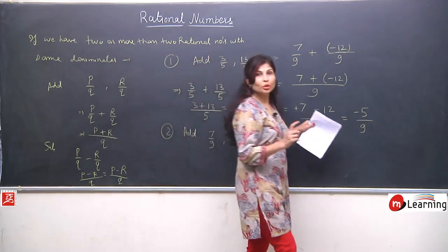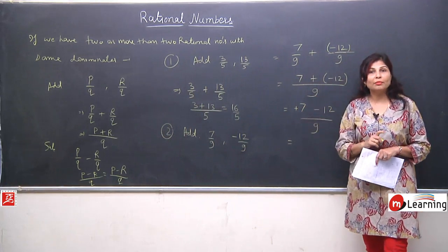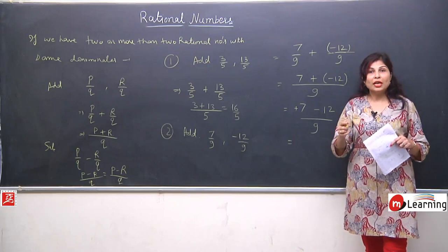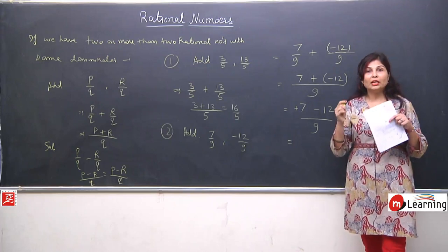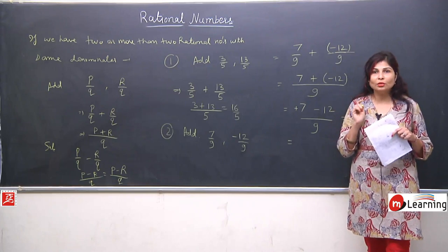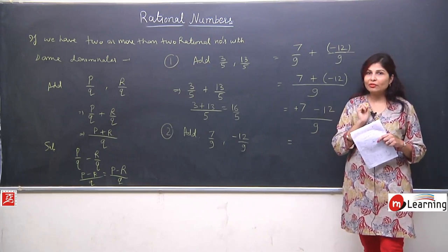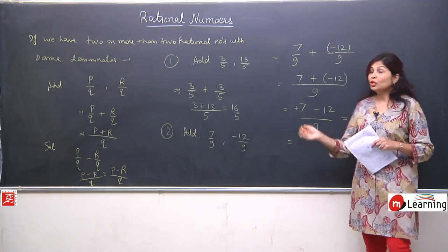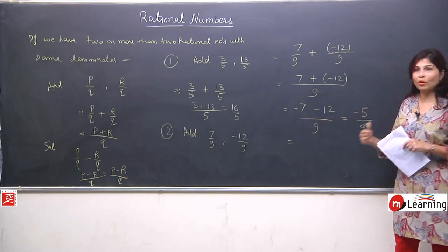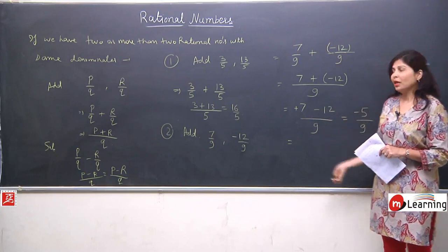The purpose of taking this question was to show that we will not always get positive rational numbers — we will also get negative ones, because by the definition of rational numbers, P and Q are integers, and integers can be both positive and negative. So when negative integers appear, we need to be clear about the operations we studied in previous classes.